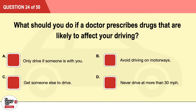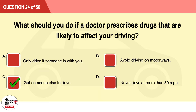Question 24: What should you do if a doctor prescribes drugs that are likely to affect your driving? A: Only drive if someone is with you. B: Avoid driving on motorways. C: Get someone else to drive. D: Never drive at more than 30 miles per hour. The correct answer is C: get someone else to drive.